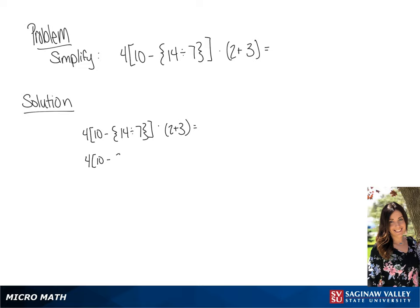So we're going to simplify the 14 divided by 7, which is going to be 2, so in the brackets we have 10 minus 2. And the 2 plus 3 is going to be 5.